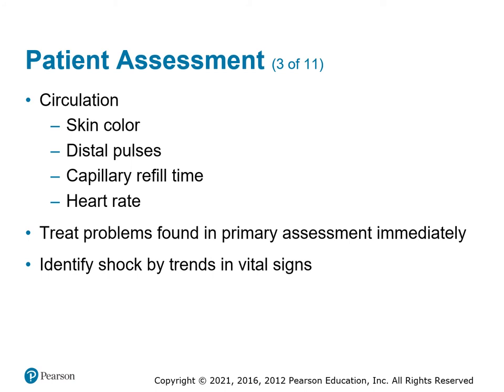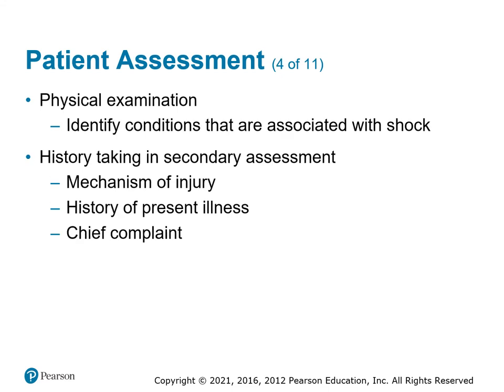For circulation, we're concerned with skin color, distal pulses, cap refill, and heart rate — these all indicate whether the patient is compensating or decompensating. If you find active bleeding, fix it immediately rather than waiting if it's a life-threatening bleed. Get a good set of vital signs as a foundation and trend them every five minutes to see if the patient is compensating or decompensating. Perform a thorough head-to-toe physical exam using DCAP-BTLS.